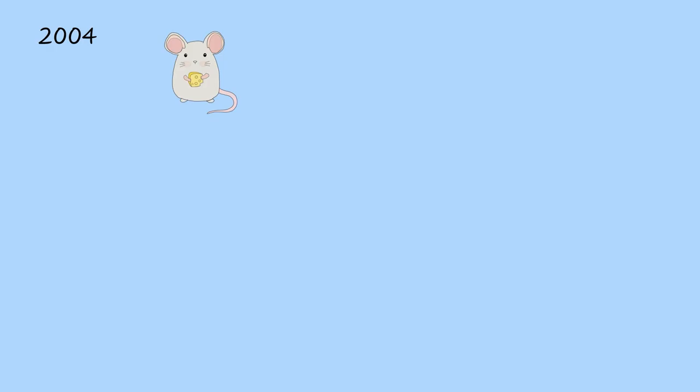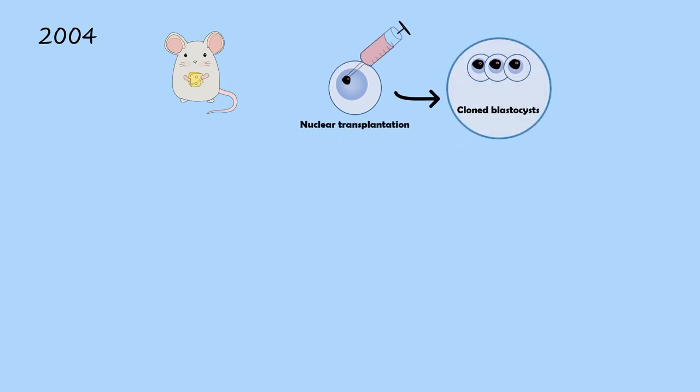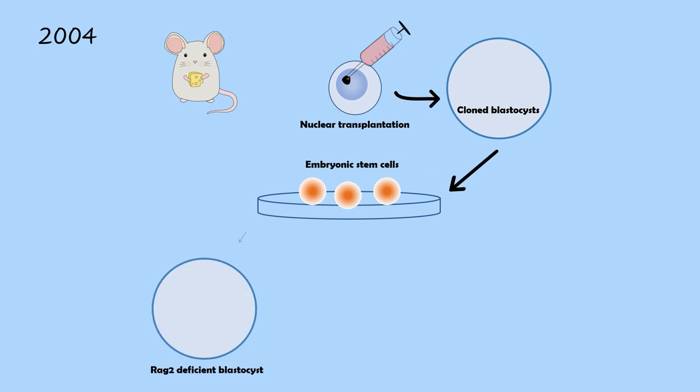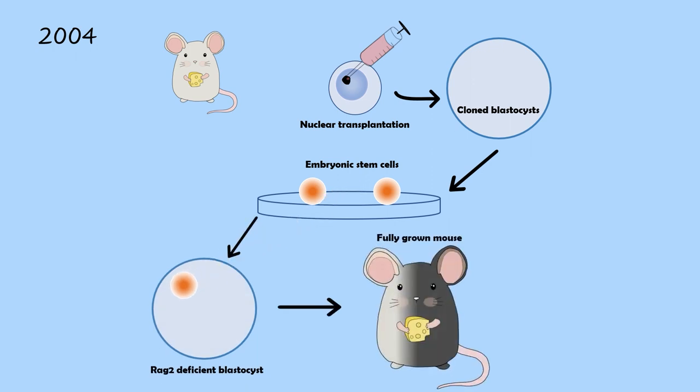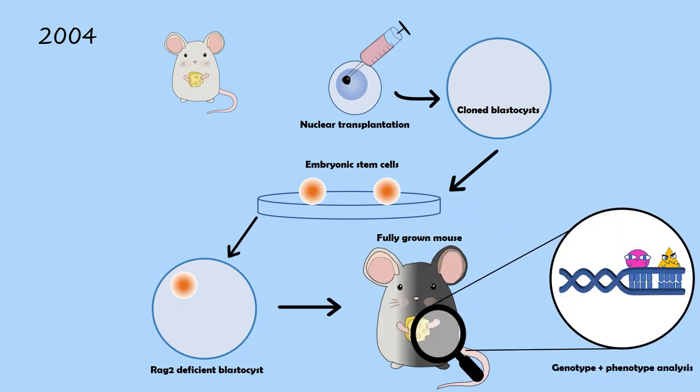To test this, Hochedlinger and his group conducted nuclear transplantation of tumor cells into embryos of mice. The clones were allowed to develop into blastocysts, which were explanted into tissue culture to derive embryonic stem cells. They then inserted these embryonic stem cells into RAG2 deficient blastocysts. Once these had matured, they analyzed the grown chimeric mice genotype and phenotype.